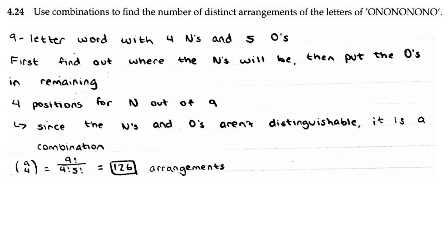AOPs Counting and Probability 4.24: use combinations to find the number of distinct arrangements of the letters of 'this.' This is a 9-letter word with 4 N's and 5 O's. First we find where the N's will be, then put the O's in the remaining spots. There are 4 positions for N out of 9 total letters. Since the N's and O's aren't distinguishable, we use combinations: 9 choose 4, which equals 126 arrangements.